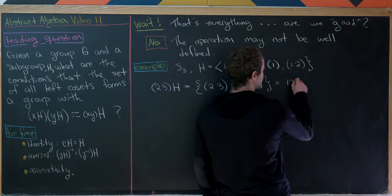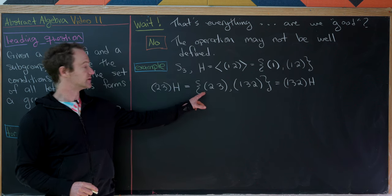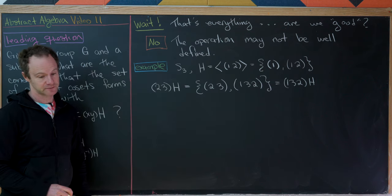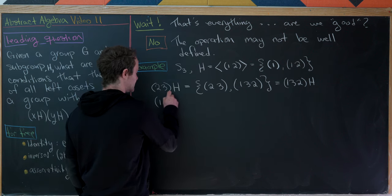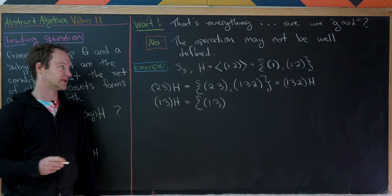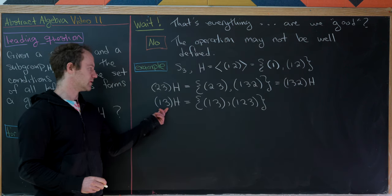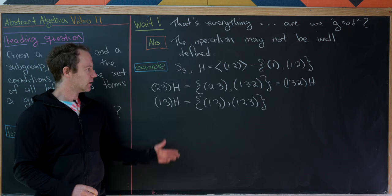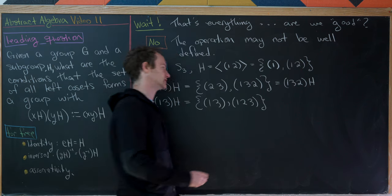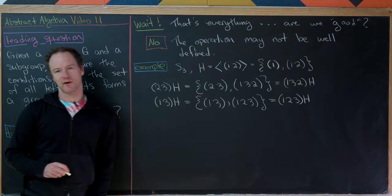So we've got two different ways of writing one coset: (2 3)H and (1 3 2)H. Now let's look at the coset associated to (1 3). That's going to be (1 3) — from multiplying (1 3) into the identity — and then the 3-cycle (1 2 3), from multiplying (1 3) into (1 2). But again, the coset can have a representative which is any element of that coset, so we can rewrite this as the coset associated to (1 2 3), from that big theorem two videos ago.